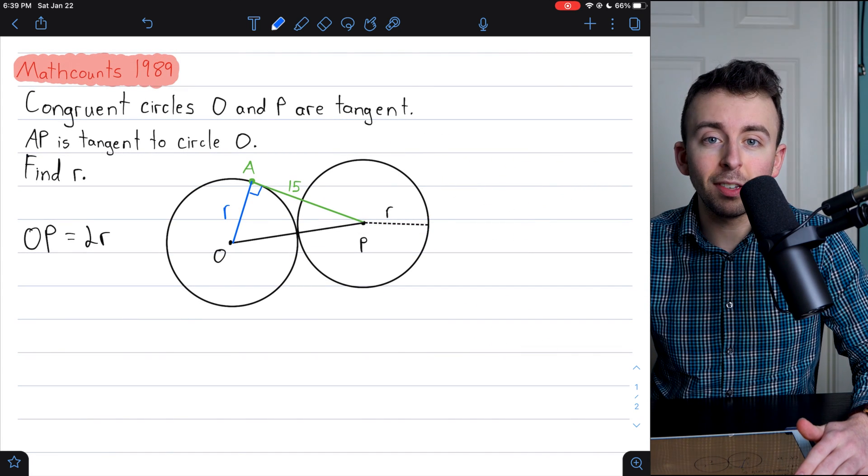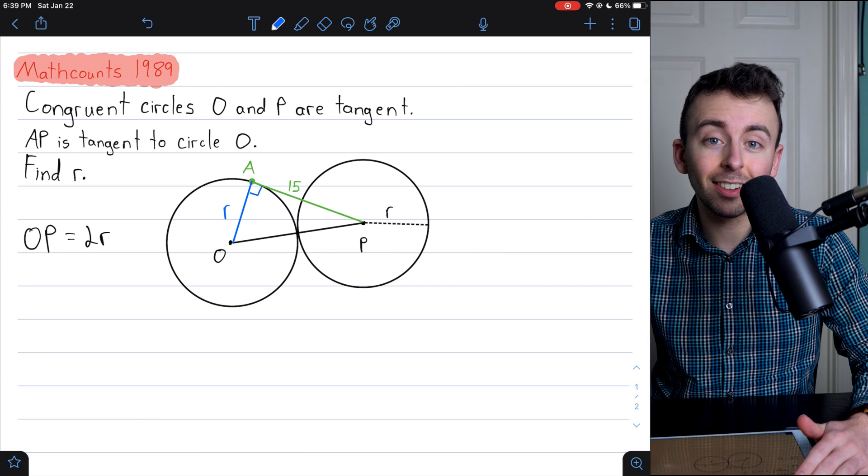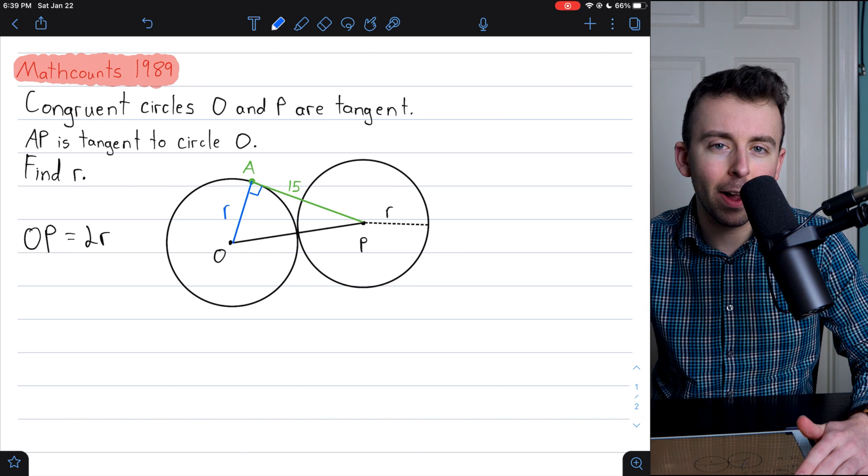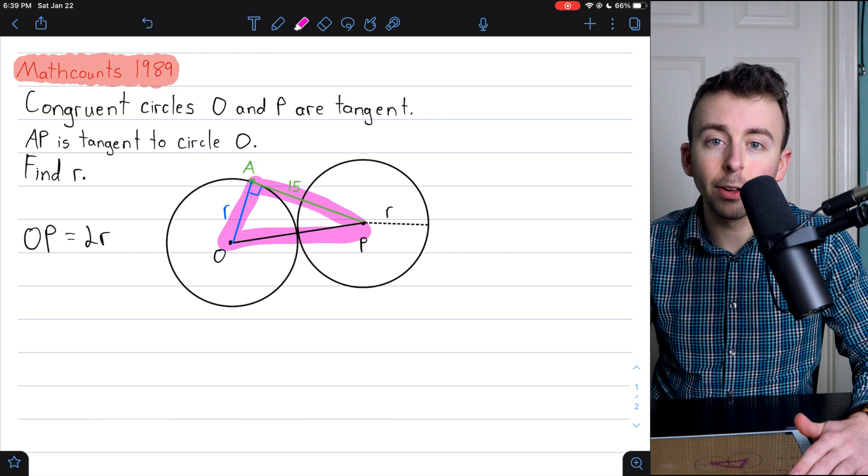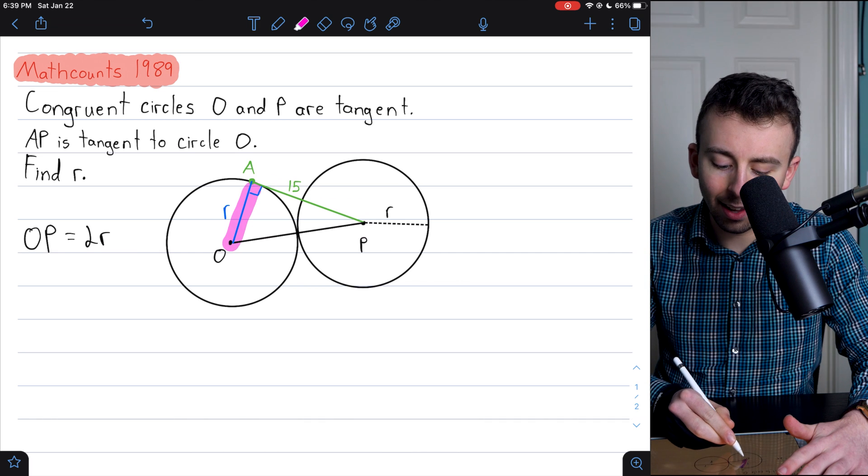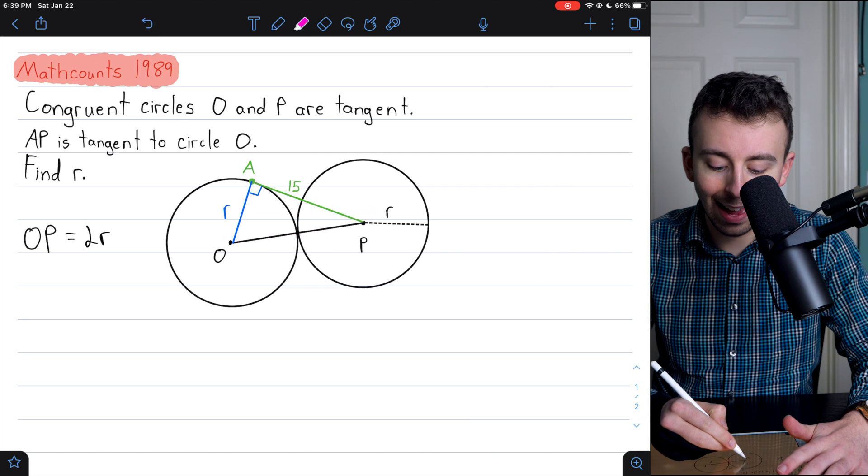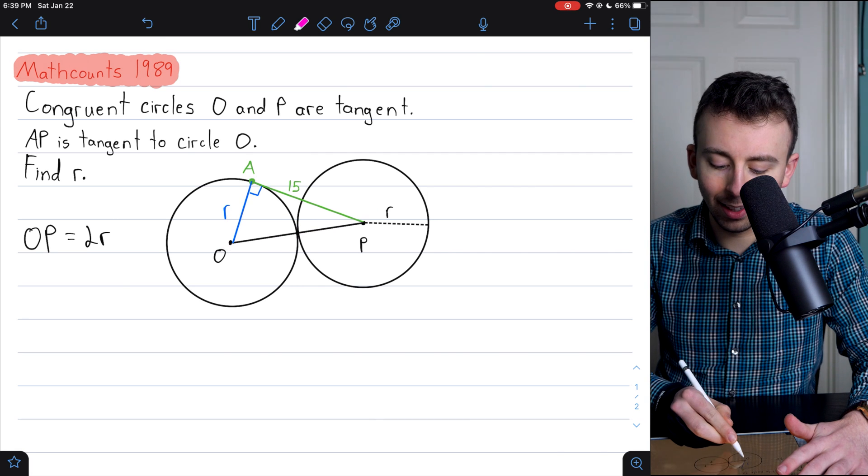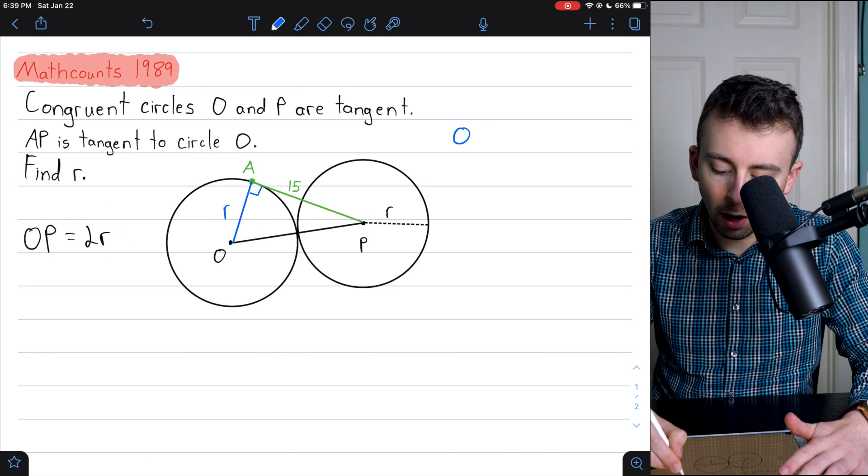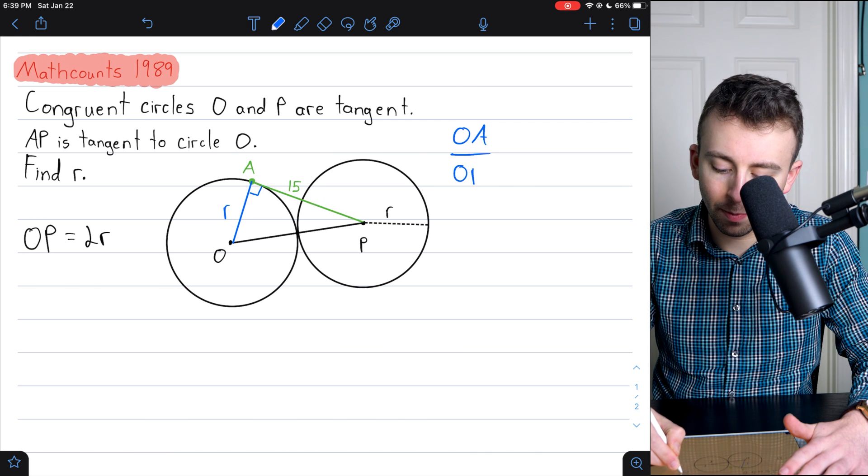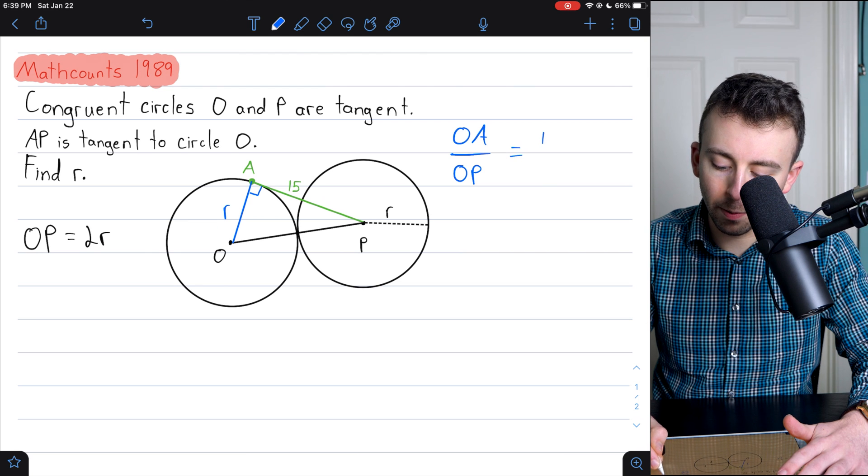All right. The second solution is pretty slick. It also involves right triangles. In particular, you've got to know some facts about 30, 60, 90 right triangles. Here's how the solution works. We've got to notice that in this right triangle, the ratio of this leg to the hypotenuse is one half, right? Because the length of this leg is R and the length of the hypotenuse is 2R. So let's even go ahead and write it down. OA over OP, the ratio of this leg to the hypotenuse is R over 2R, which is one half.